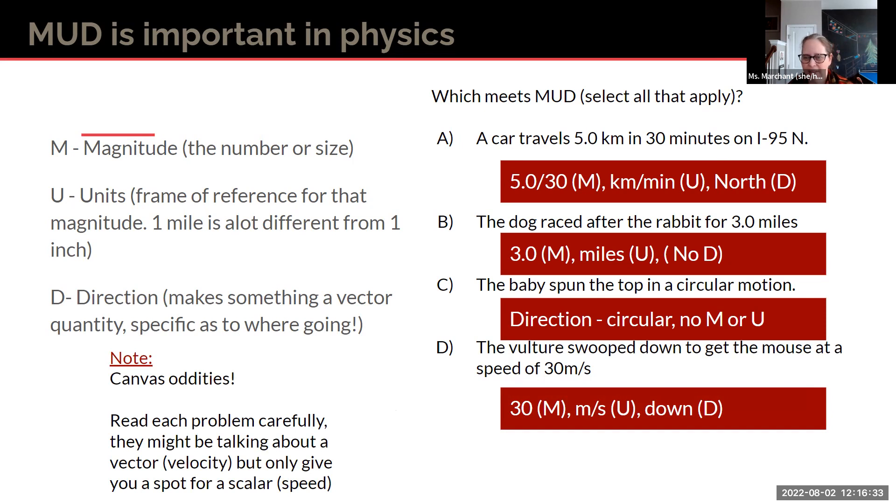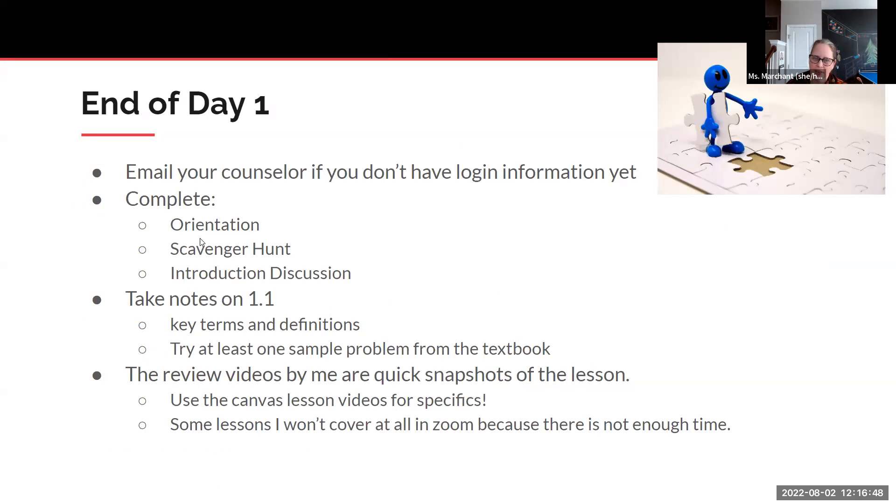Sometimes it is going to ask for a vector quantity, but not give you a spot to put the direction. And then that is fine. I will always spot check the quizzes. If you gave more information than needed, I would still give you credit. So again, if you don't have your login information, email your counselor. Make sure you complete the orientation, the scavenger hunt, and the introduction discussion. Take notes on 1.1. And then just remember that these Zoom reviews are just little quick snapshots of what is the most critical information. But you do still need to do everything in the Canvas lesson to get all that you need out of this. And have a great day.